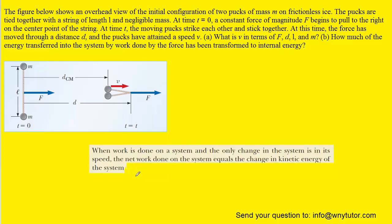You might want to pause the video here and read this statement a couple of times, but according to the theorem, when work is done on a system and the only change in the system is in its speed, then the net work done on the system is equal to the change in kinetic energy of the system. Here it is in equation form: the external work done on the system is equal to the system's change in kinetic energy.